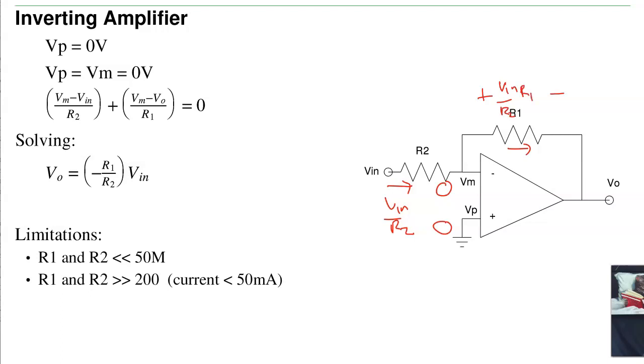The voltage then is going to be I times R, VN over R2 times R1. This is ground, so the output voltage is going to be minus R1 over R2 times VN. And there's your gain, minus R1 over R2 times VN.